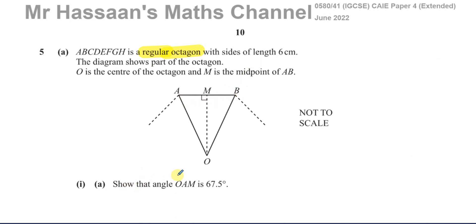Show that the angle OAM — this angle over here — is 67.5 degrees. We've got to find out what this angle is.